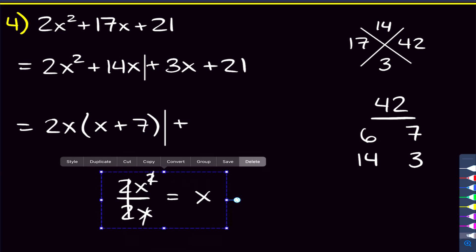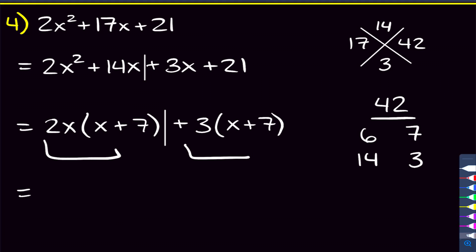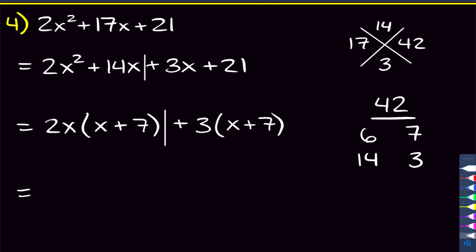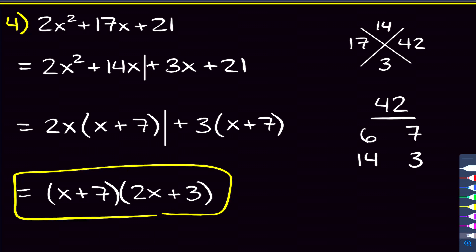If you're having trouble dividing by 2x in your head, write it out — the 2s cancel and one x cancels, giving you x, and 14x divided by 2x gives 7. For the second group, both terms are multiples of 3, so factor out 3: 3x divided by 3 is x, and 21 divided by 3 is 7, giving 3 times x plus 7. Both groups share x plus 7, so we factor that out. We get x plus 7 times 2x plus 3 — those are our factors.